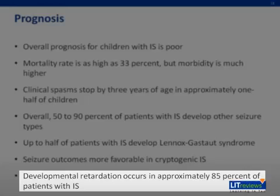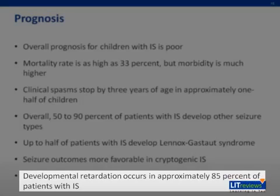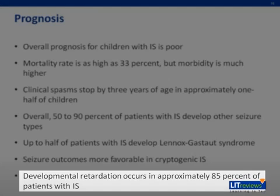Some adults with a history of IS have normal intelligence and socioeconomic status. In a recent study, intelligence was normal or only mildly impaired in 24% of survivors of IS, and 33% had no seizures. Some patients with normal intelligence and socioeconomic status had symptomatic IS or focal EEG findings. All patients with a good outcome had short delays between presentation and treatment and responded to ACTH therapy.